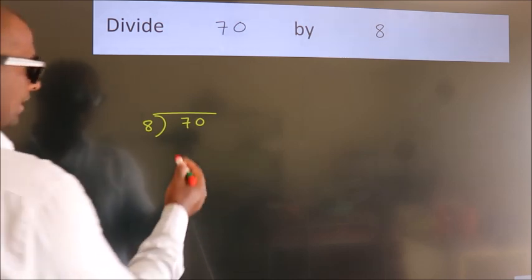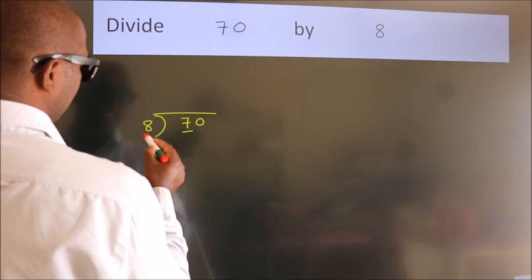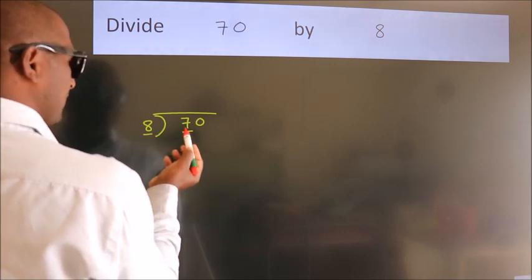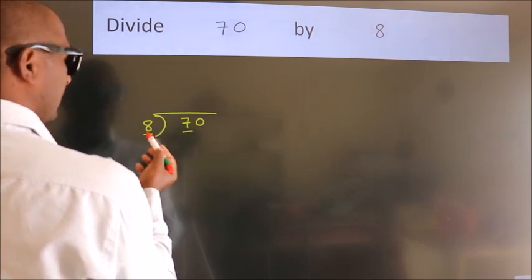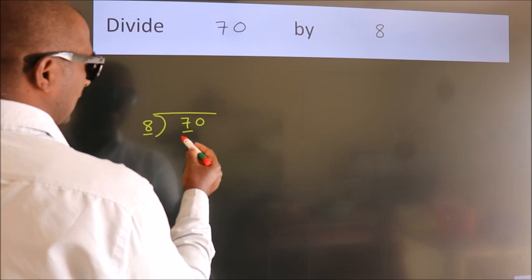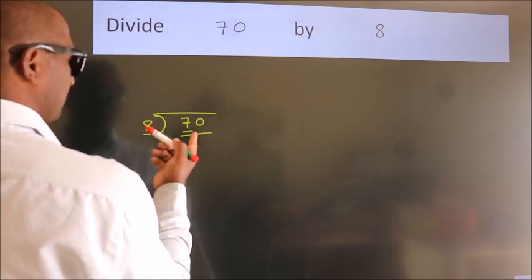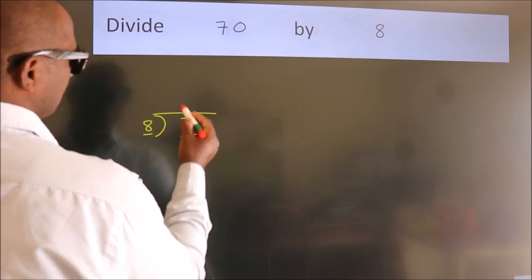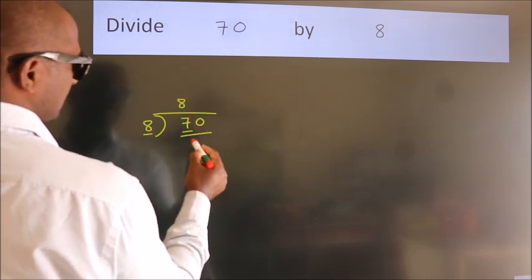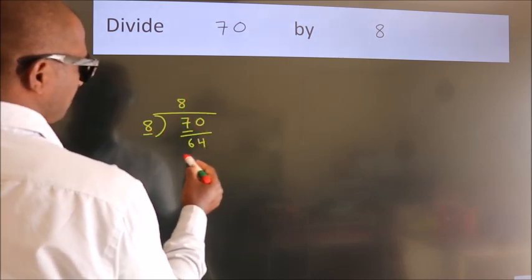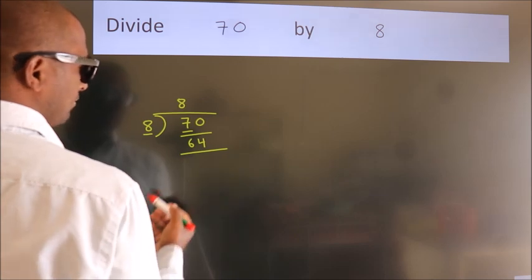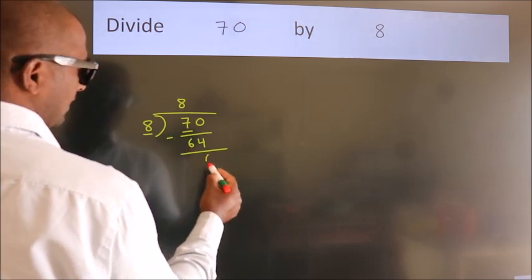Next. Here we have 7. Here 8. 7 is smaller than 8, so we should take two numbers: 70. A number close to 70 in the 8 table is 8 times 8 equals 64. Now we should subtract. We get 6.